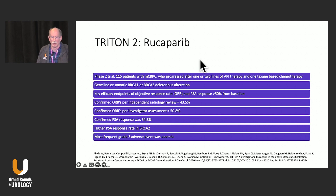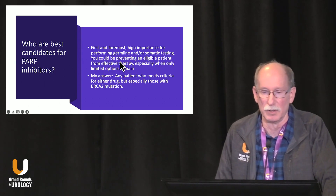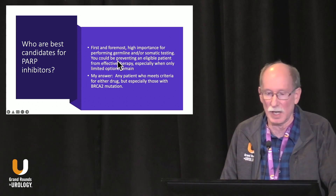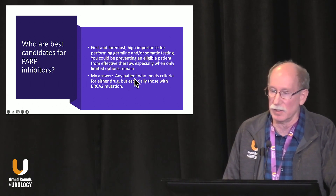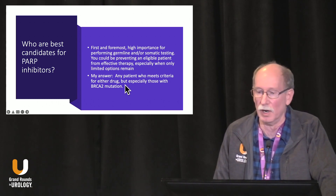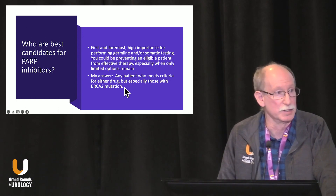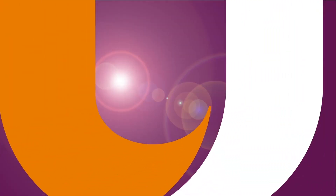The TRITON trial was the rucaparib phase 2 study — the TRITON 3 data is not yet mature or available. In summary, performing germline and/or somatic testing is of the highest importance. Any patient who meets criteria for either drug should be considered for a PARP inhibitor, but especially those with the BRCA2 mutation — they clearly do the best.